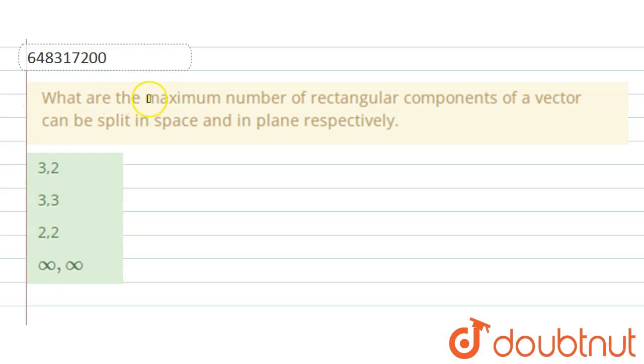Hello students, here the question is: what are the maximum number of rectangular components of a vector can be split in a space and in plane respectively.